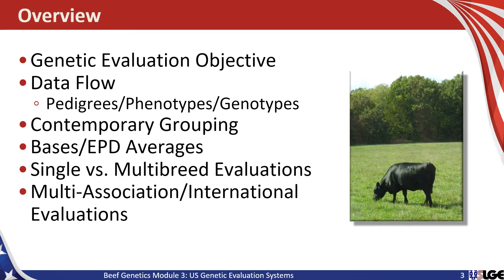An overview of today's module includes an overview of genetic evaluation objectives, some discussion on data flow — how pedigrees, phenotypes, and genotypes move through our beef value chain — some discussion on contemporary grouping strategies for each of the various trait definitions, a discussion on bases and EPD averages, a review of single and multi-breed evaluation structures, and also some discussion on multi-association or international evaluations and how those systems work.